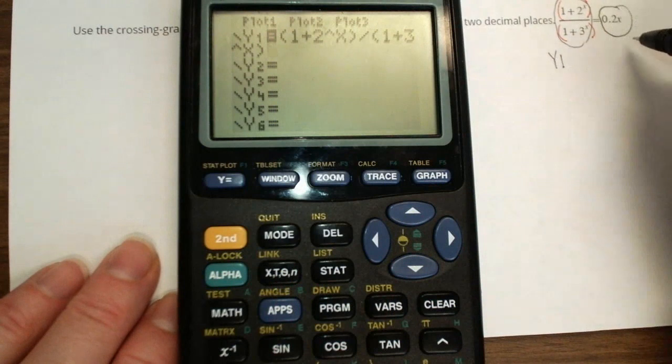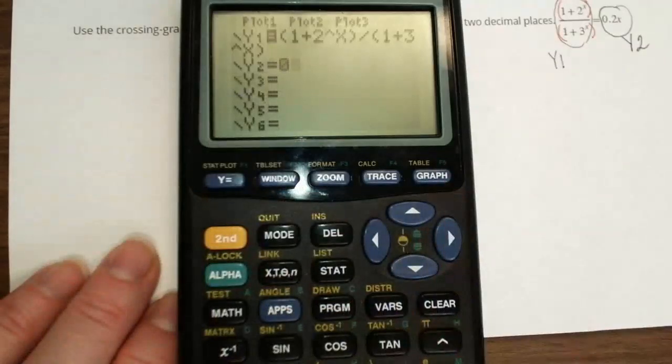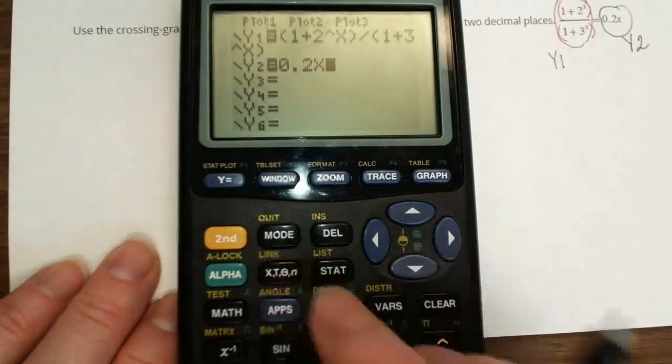Whatever you have on the right will be your second equation, Y2. So you have to go down to Y2 and type 0.2x.